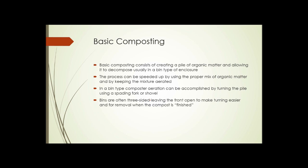Basic composting usually consists of creating a pile of organic matter and allowing it to decompose in some type of bin or enclosure. The process can be sped up by using the proper mix of organic matter and by keeping the mixture aerated so that oxygen is always available to the soil organisms doing the composting. In a bin-type composter, aeration can be accomplished by turning the pile using a spading fork or shovel. Bins are often built three-sided, leaving the front open to make turning easier and for removal when the compost is finished.